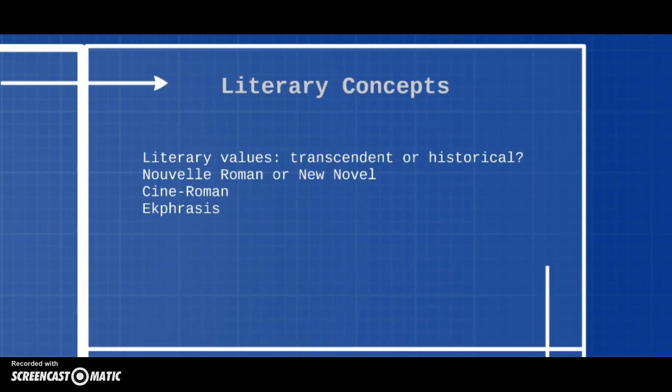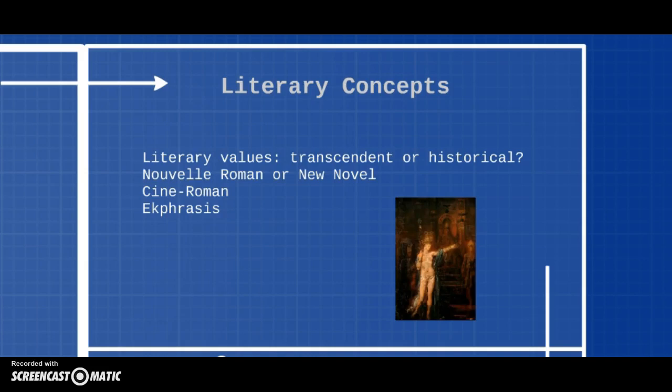So let's go over and look at these literary concepts. So we have some kind of meta concepts today, maybe. So that big question is, are literary values transcendent? Are they historical? Do they change over time, or do they sort of last forever?